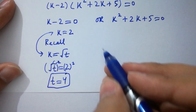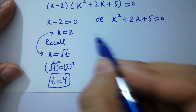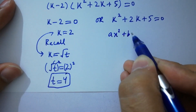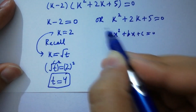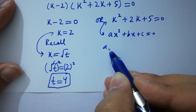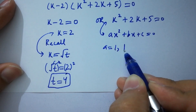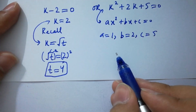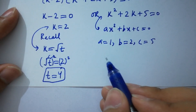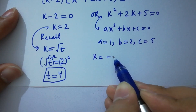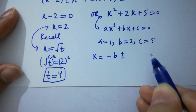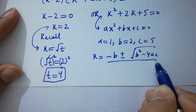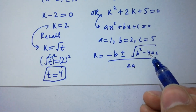Next we have the quadratic equation k squared plus 2k plus 5 equals 0. Comparing with ax squared plus bx plus c equals 0, we have a equals 1, b equals 2, and c equals 5. So apply the quadratic formula.